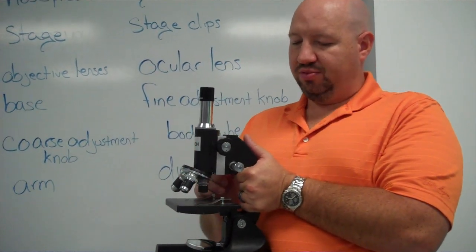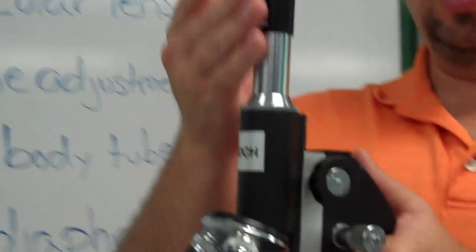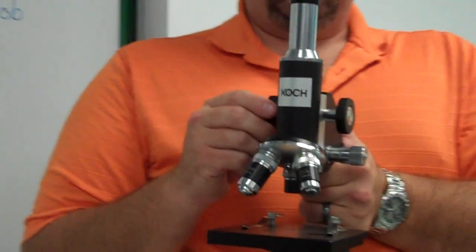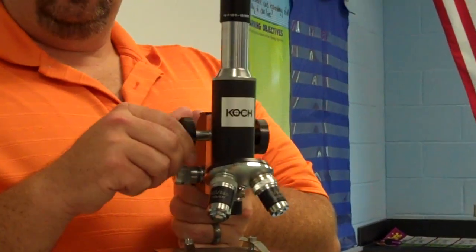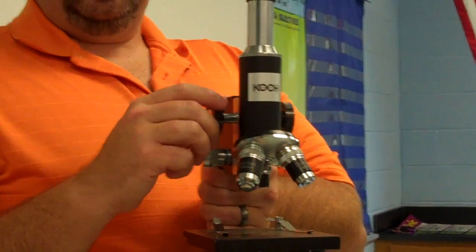You have two sets of knobs. The larger knob actually moves the body tube up and down. That's called the coarse adjustment knob. You utilize this knob to try to focus the image.